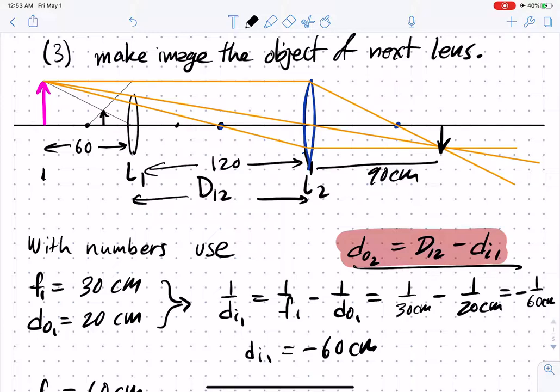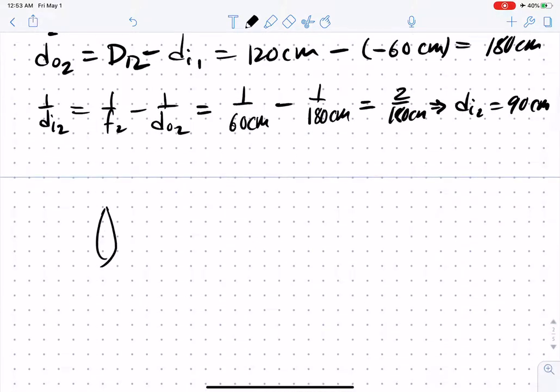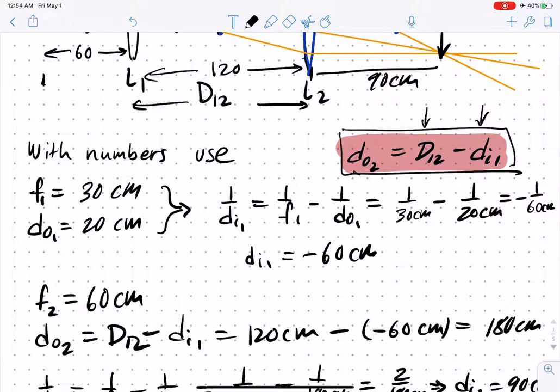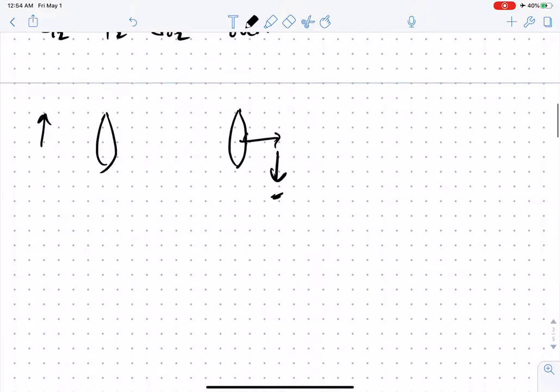I mentioned last time that it's actually possible to have a negative object distance. You can see how that would happen if this is smaller than that. What that means is you make an image in the first lens, then you place the next lens on that side of it. How do we deal with that? The thin lens equation works just fine as long as we treat this as a negative distance, and this equation makes that work out just right.